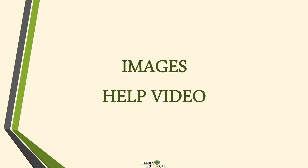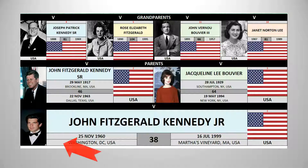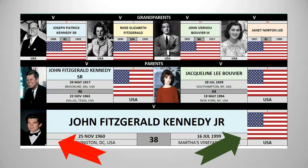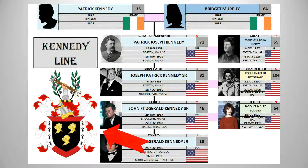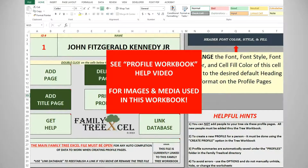This video will go over all the images available in the tree workbook. There are four types of images used: profile images, birth country flag images, surname images, and other inserted pictures. This video will show how to add, modify, and delete all these image types. Images and media used in the profile workbook are discussed in the profile workbook help video.